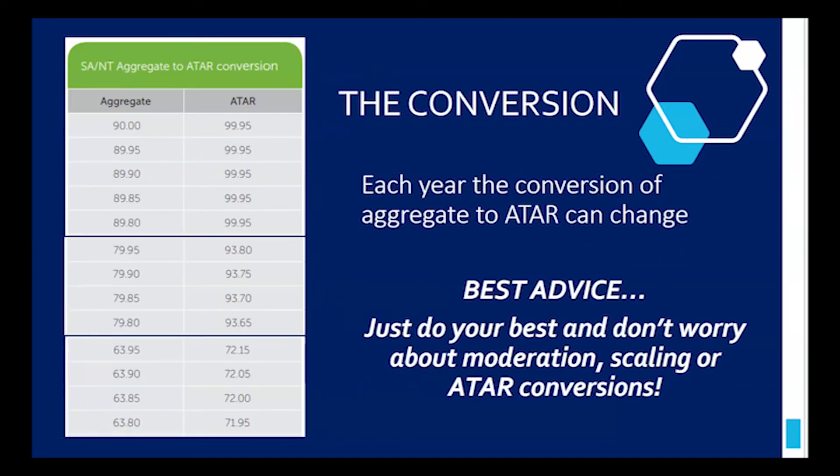There's a conversion table which you can search for from SATAC. Each year, the conversion of aggregate to ATAR can change. So this is the one from last year. If you got an aggregate of 89.8, you'd still get 99.95. Even getting an aggregate of 63.8 will give you an ATAR in the top 30%.